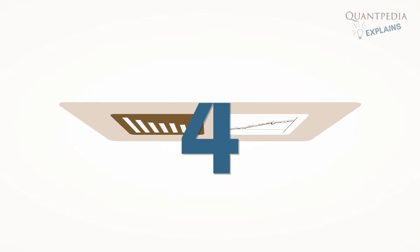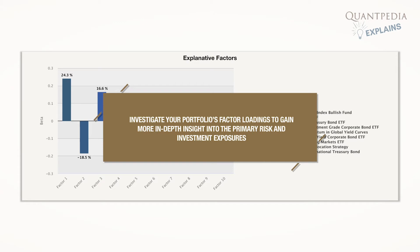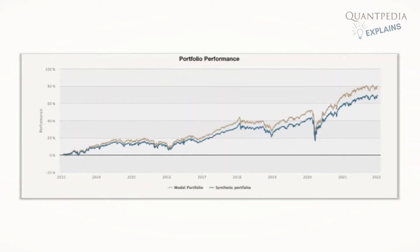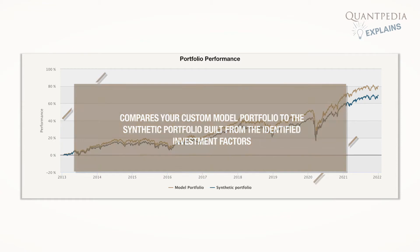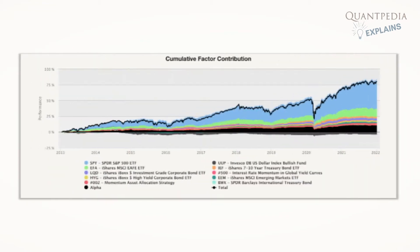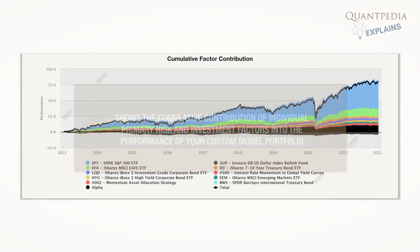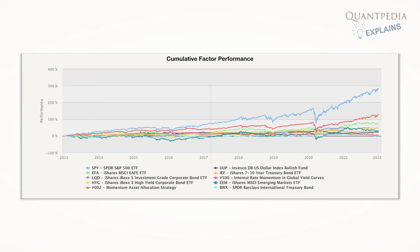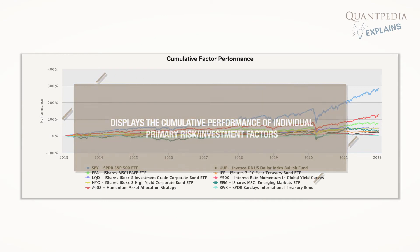Our report displays four charts. The first one helps you investigate your portfolio's factor loadings to gain more in-depth insight into the primary risk and investment exposures. The second chart compares your custom model portfolio to the synthetic portfolio built from the identified investment factors. The third graph shows the cumulative contribution of individual primary risk and investment factors into the performance of your custom model portfolio. And the last chart displays the cumulative performance of individual primary risk investment factors.